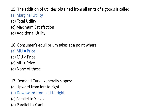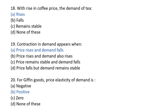Next question: demand curve generally slopes? The slope of the demand curve is downward from left to right — this is because of the law of demand, which is an inverse relationship. If prices are lower, then quantity demanded will increase. So the demand curve slopes downward from left to right.